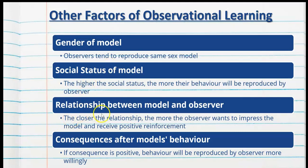We also need to consider the relationship between the model and the observer. The closer the relationship, the more the observer may want to impress the model and receive positive reinforcement. This is particularly relevant in families — between parents and children, siblings, etc. The consequences of a behaviour are also a major factor: if we observe positive consequences, the behaviour will be more likely to be reproduced; however, if the consequences are negative, it is less likely the behaviour will be reproduced.